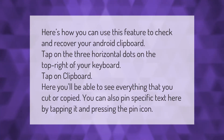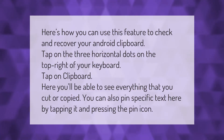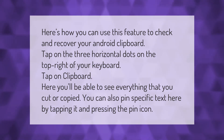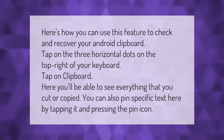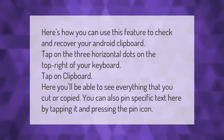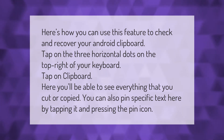Here's how you can use this feature to check and recover your Android clipboard. Tap on the three horizontal dots on the top right of your keyboard, then tap on 'Clipboard.' Here you'll be able to see everything that you cut or copied. You can also pin specific text by tapping it and pressing the pin icon.